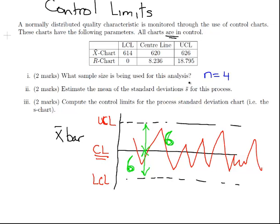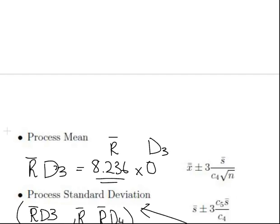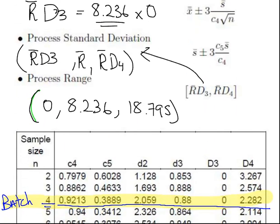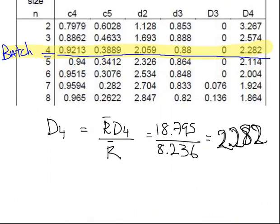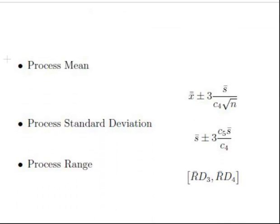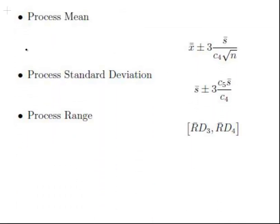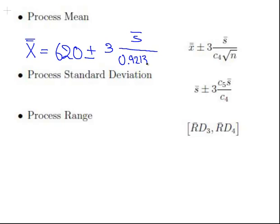The next question is estimate the mean of the standard deviations S bar. We have to find out what S bar is. We're going to use this formula here. X double bar is 620 plus or minus 3 times S bar over c4, which is 0.9213, times the square root of n, square root of 4, which is 2.